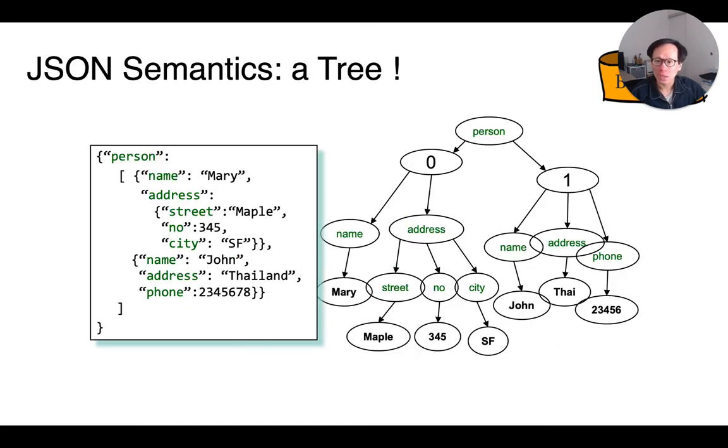Now, how do we interpret a JSON document? Turns out, we can actually represent that using a tree. For instance, in this document, we store an array of persons and we can represent the entire document using the tree here shown on the right.